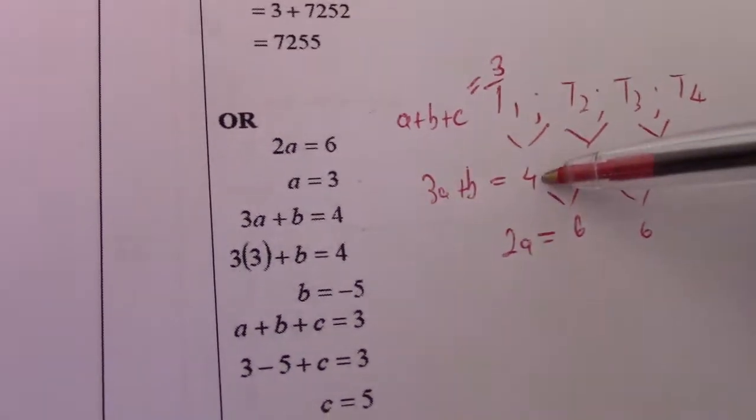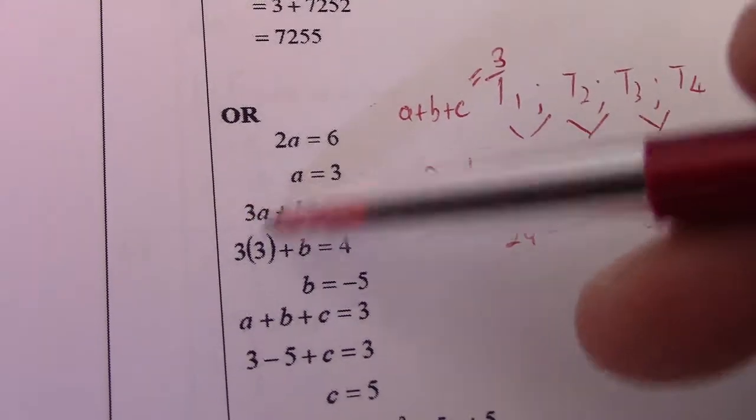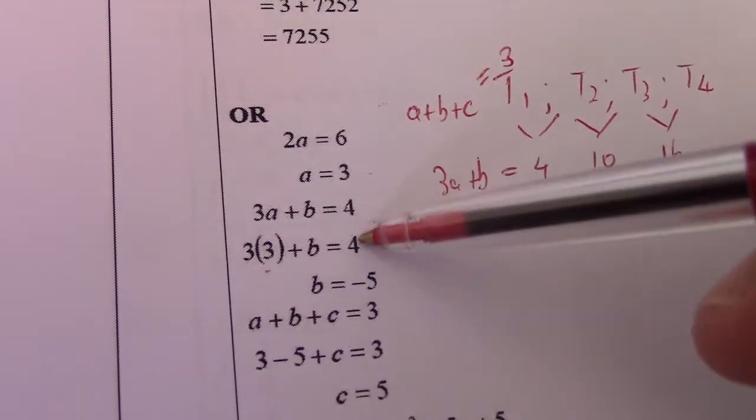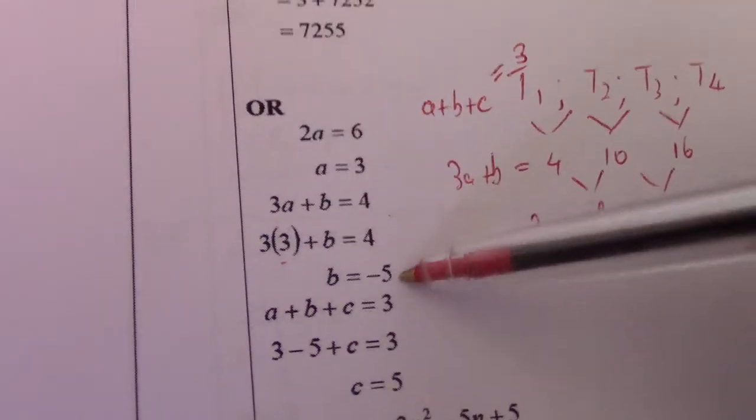3a plus b equals 4, so if I put in 3, 3 times 3 gives me 9, 4 minus 9 gives me minus 5.